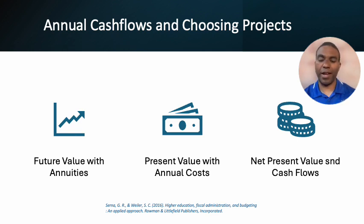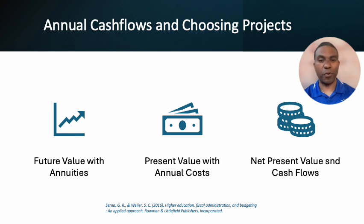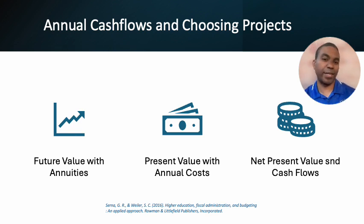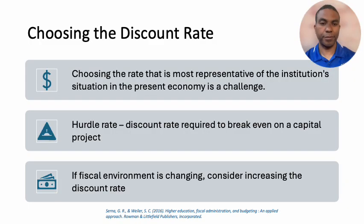They also discuss net present value and cash flow — how much do you have today and how much money is a project going to bring in? For example, if you're going to build a residence hall, it's going to generate some income. You figure out how much it costs today, how much income it will generate, and compare that with, say, fixing up an old residence hall — what that costs and how much revenue you can get. That helps you decide which is the better deal.